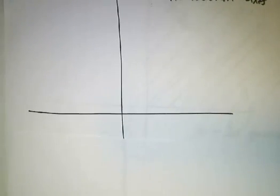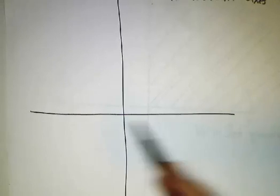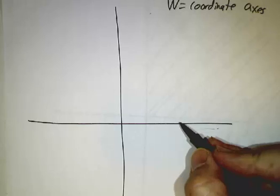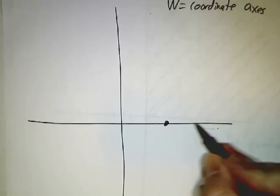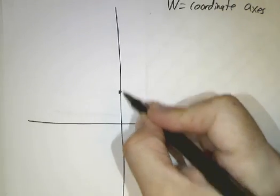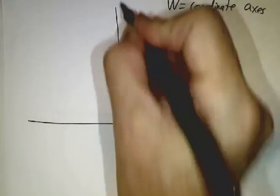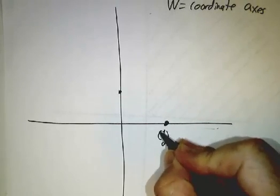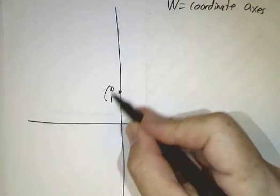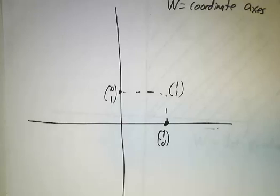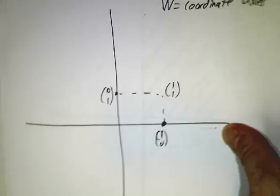Next example: W is the coordinate axes — everything on the x-axis and everything on the y-axis. That's closed under scalar multiplication: rescaling something on the x-axis keeps it on the x-axis, and similarly for the y-axis. But it's not closed under addition: (1, 0) plus (0, 1) equals (1, 1), which is not on the coordinate axes. So it's not a subspace.